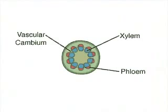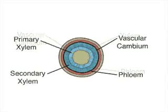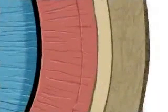In a young plant, vascular bundles composed of xylem, phloem, and vascular cambium are distinct from one another. As growth continues, the vascular cambium forms a continuous ring near the perimeter of the stem.